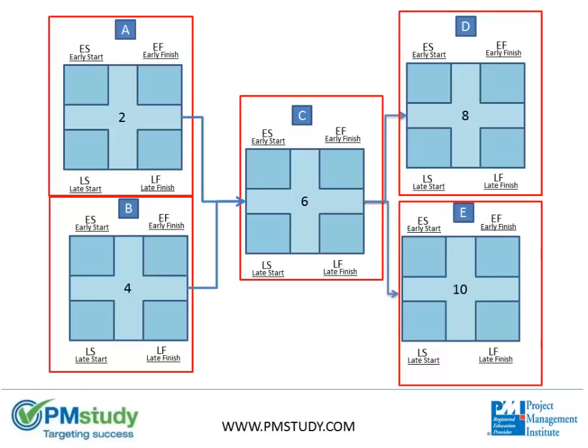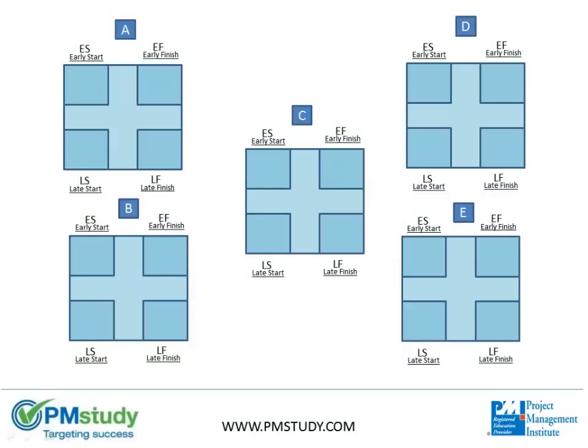This diagram depicts a finish-to-start relationship, which means the predecessor activity must finish before the successor activity, or task, starts. The relationship of these tasks are shown through the arrows. The arrow extending from the end of task A flows to the beginning of task C, depicting A as a predecessor to task C.